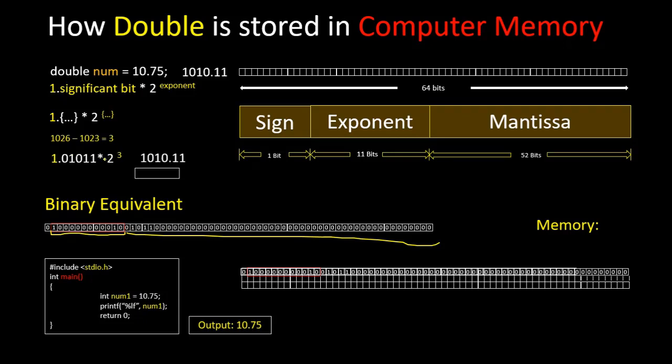Then if we convert this into binary, then it will look like this: 1010.11. And if we convert this into decimal, then it will be a positive number, 10.75. It prints 10.75.